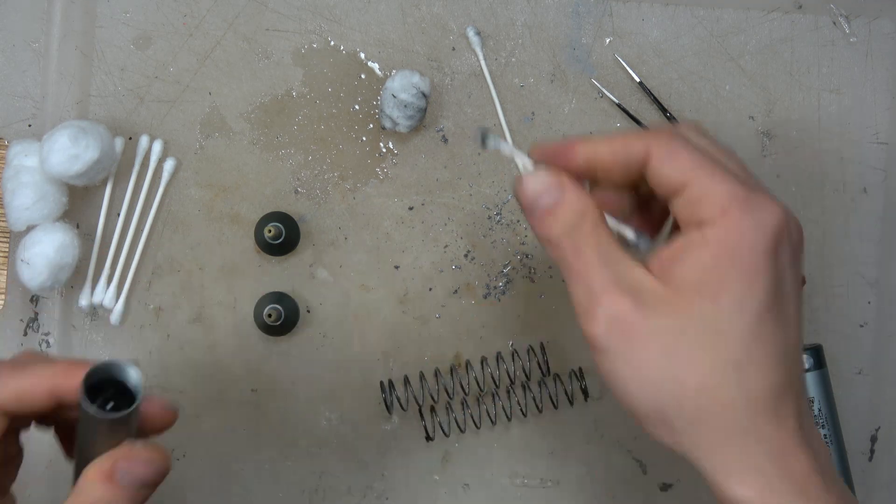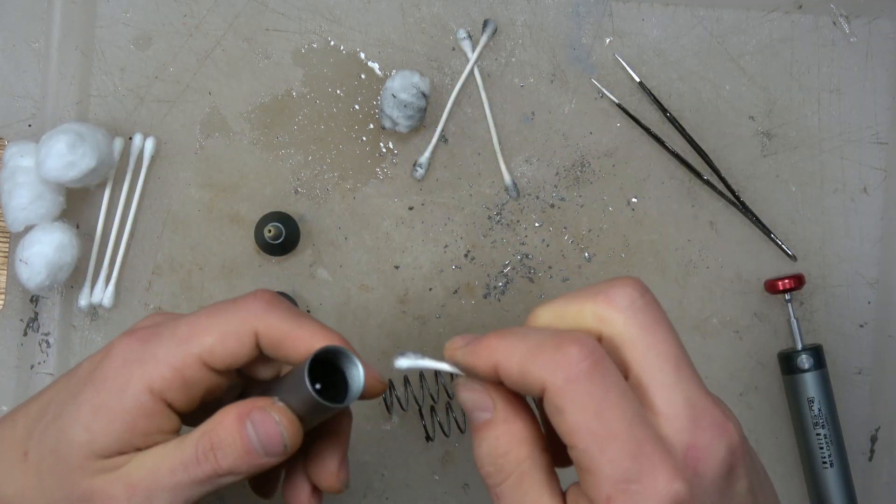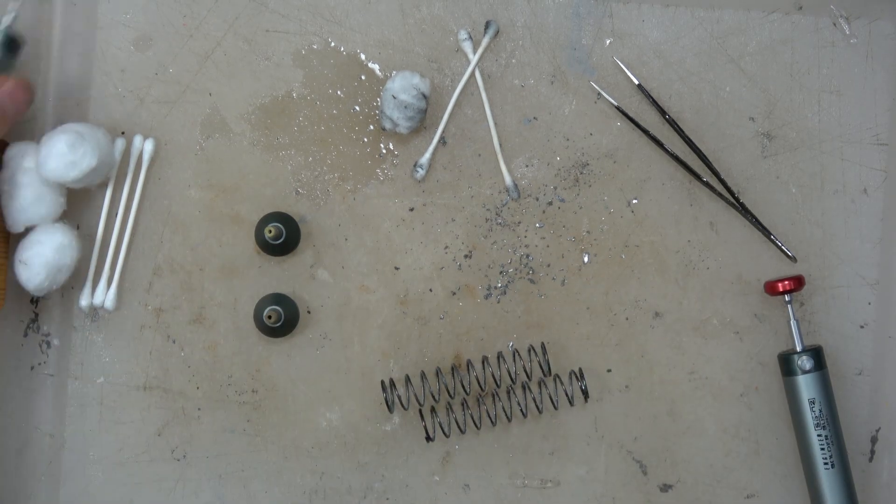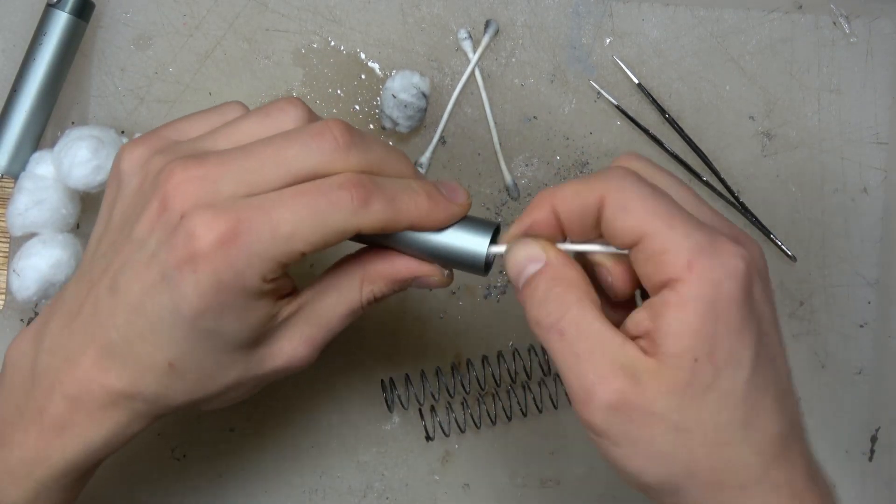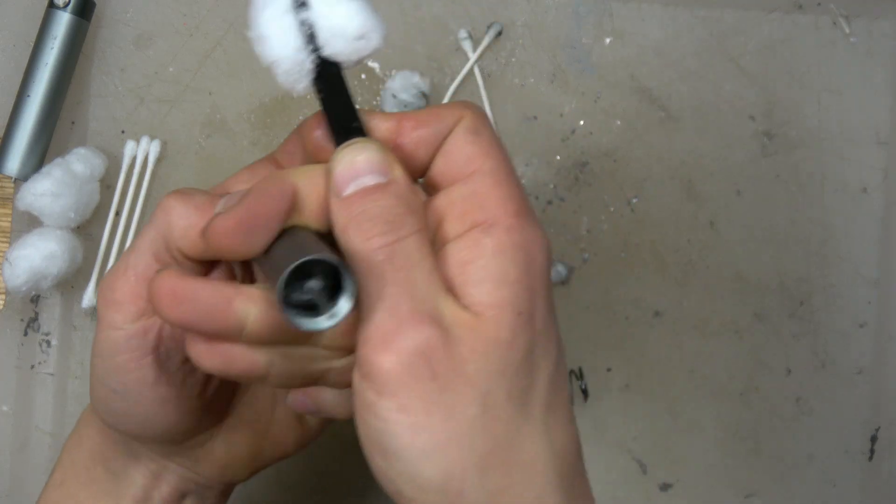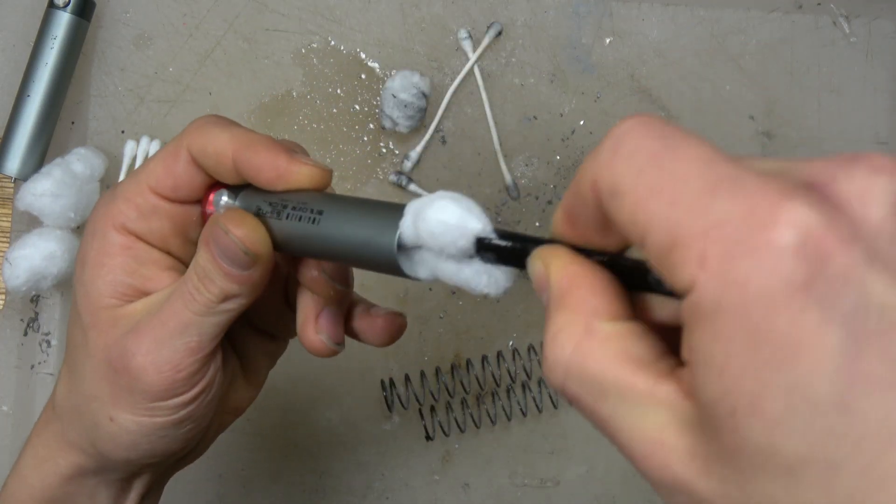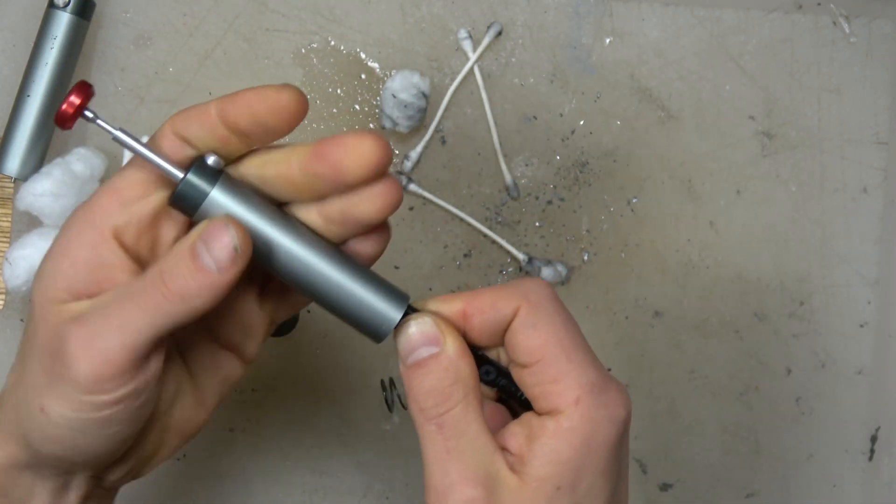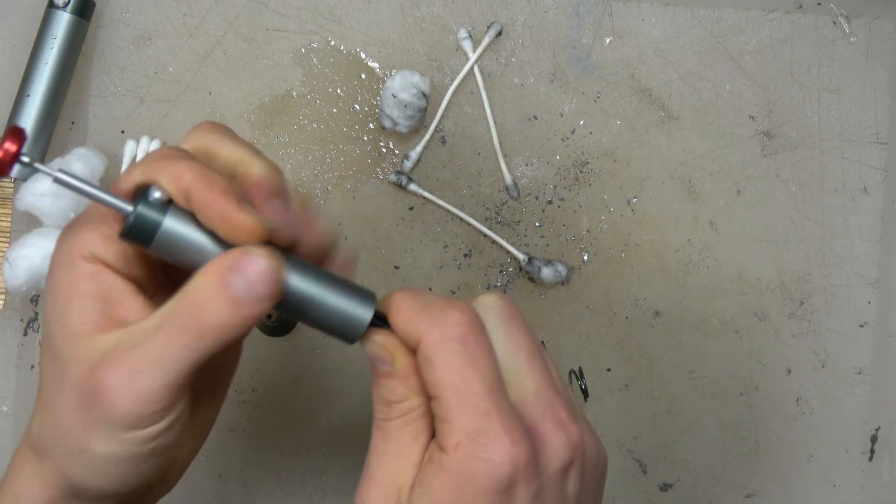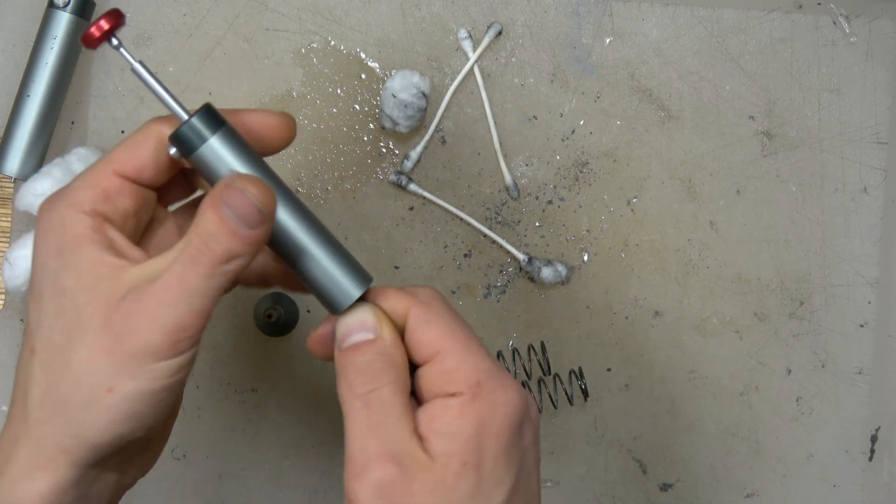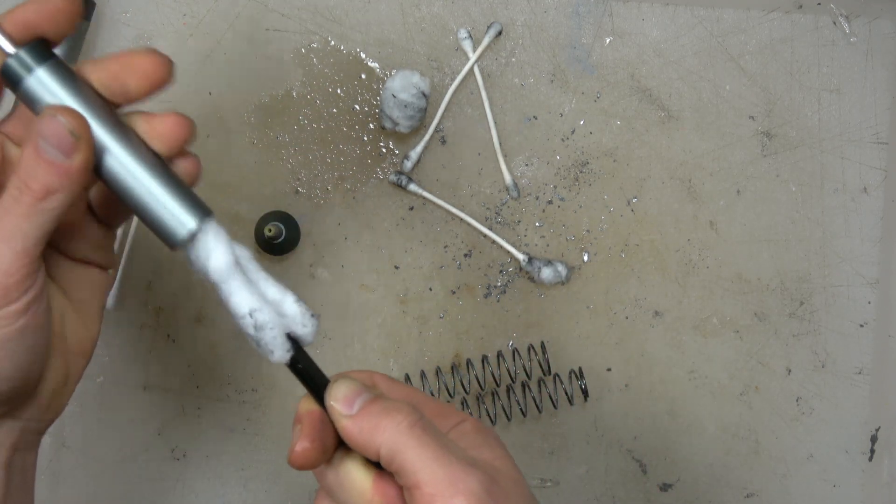You got to clean it very thoroughly. I just kept cleaning and you'll still always find more solder in there. Once you get the chamber all done, then you move on to the spring. I find using the Q-tip and getting it inside, and then going back with the cotton ball works really well, sticking it inside the chamber and just spinning it.